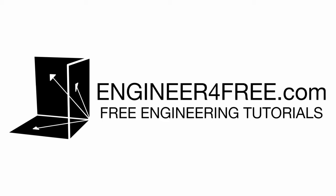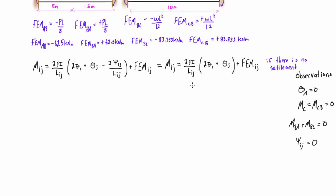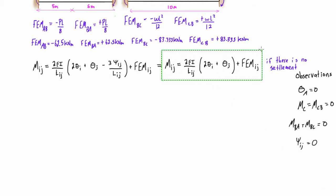Welcome back. This is part two of our second example on using the slope deflection equation to solve a statically indeterminate beam. Picking up right where we left off from the previous video, we have our slope deflection equation, and we're going to be using a slightly reduced version because there's no settlement in this problem.